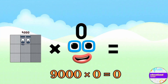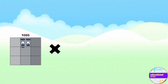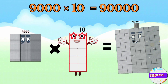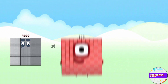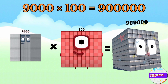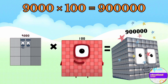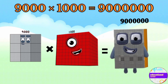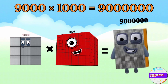9,000 multiplied by 0 equals 0. 9,000 multiplied by 10 equals 90,000. 9,000 multiplied by 100 equals 900,000. 9,000 multiplied by 1,000 equals 9,000,000.